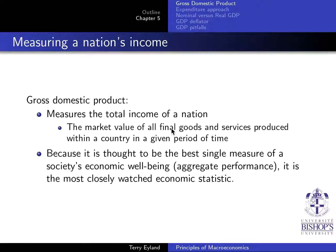Chapter 5, the first chapter on macroeconomics. The first section is on gross domestic product. Gross domestic product is the measure of total income of a nation — essentially the market value of all final goods and services produced in a given timeframe in a given country.